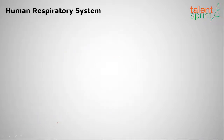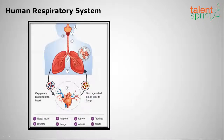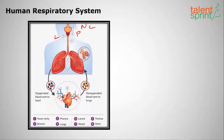Here is the human respiratory system. The first part is the nasal cavity, the second is the pharynx, the third is the larynx — also called the sound box, the fourth is the trachea, and the fifth is the pair of lungs.